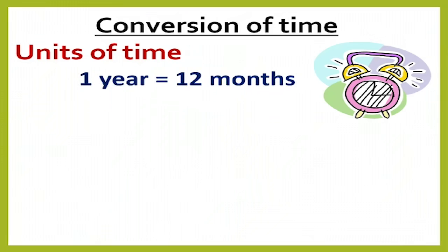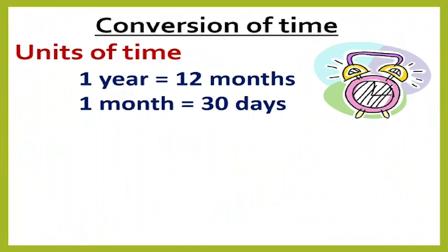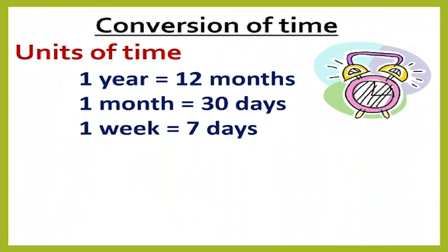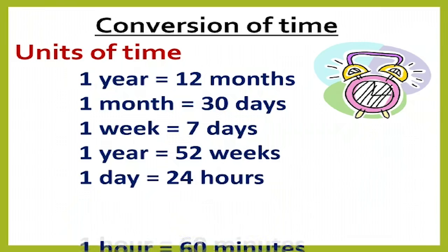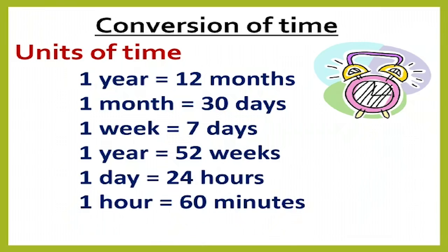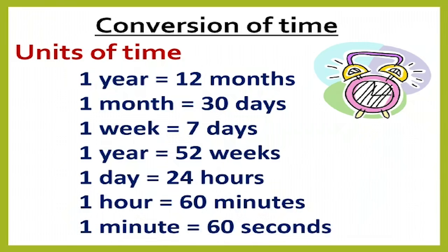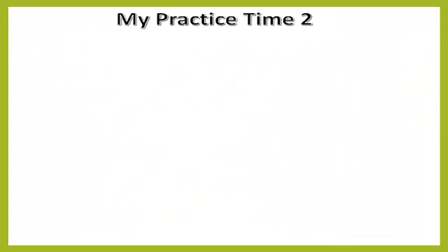One year is equal to 12 months. One month is equal to 30 days. One week is equal to seven days. One year will be equal to 52 weeks. One day will be equal to 24 hours. One hour will be equal to 60 minutes, and one minute is equal to 60 seconds.